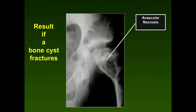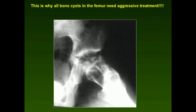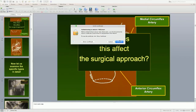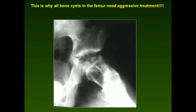The complication of bone cyst fractures in the proximal femur is avascular necrosis, as seen on this lateral view. Unlike a bone cyst in the proximal humerus where fracture and healing are less consequential, a cyst in the proximal femur that fractures requires immediate attention — you need to treat it aggressively before it fractures and causes avascular necrosis. That's why these require aggressive prophylactic treatment.